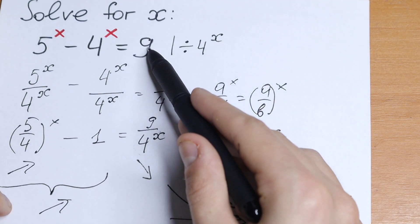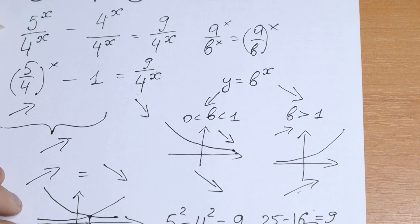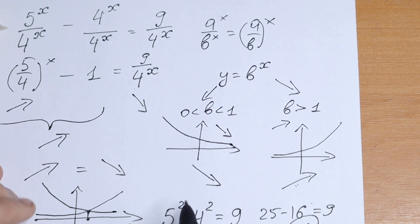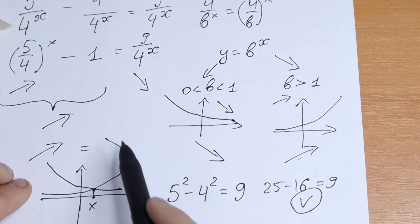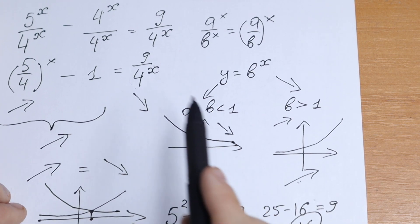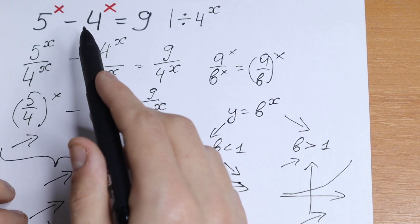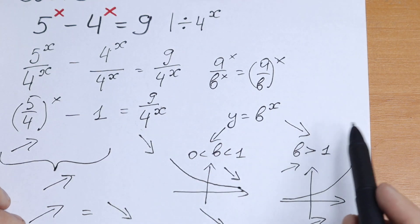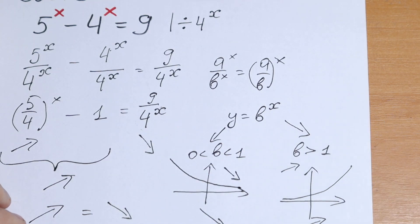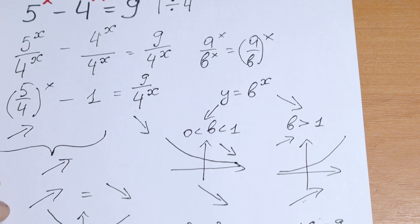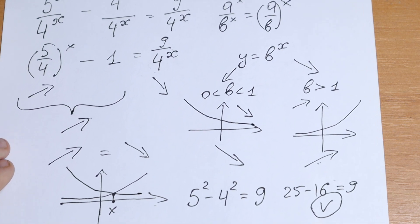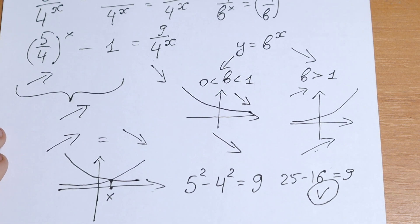Because if we have, for example, 10 right here, we cannot easily find this root by inspection. But if you show that we will have only one root by this method, you can find it by inspection. This is not a general method though. If you still have any questions, write them in the comments. Write your suggestions in the comments. Thank you for watching, subscribing, and putting thumbs up. See you in the next videos.